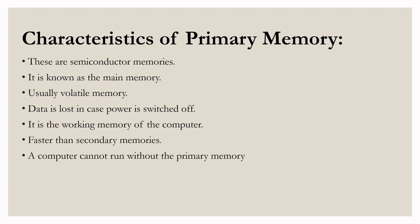In the next slide we will be discussing the characteristics of primary memory. Firstly, these are semiconductor memories, also known as the main memory, which are usually volatile memories. Data is lost in case the power is switched off. It is the working memory of the computer. It is faster than secondary memories, and a computer cannot run without the primary memory.